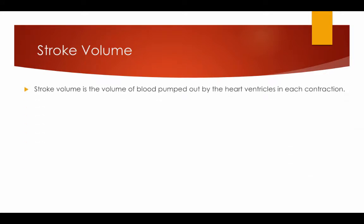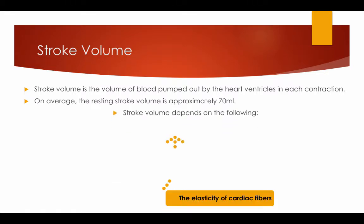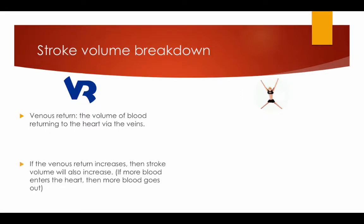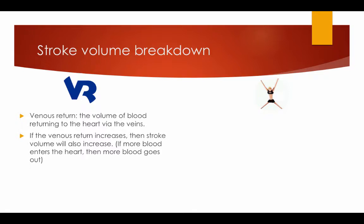Stroke volume is the volume of blood pumped out by the heart ventricles in each contraction. On average, the resting stroke volume is approximately 70 millilitres. Stroke volume depends on the elasticity of the cardiac fibres and the venous return. The venous return is the volume of blood returning to the heart via the veins. If the venous return increases, then the stroke volume will also increase — if more blood enters the heart, then more blood goes out.